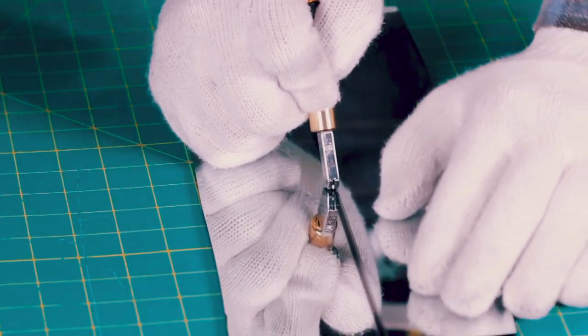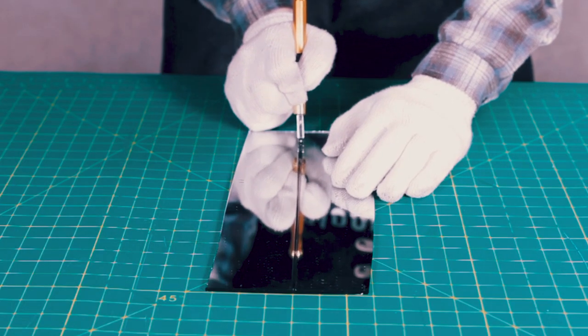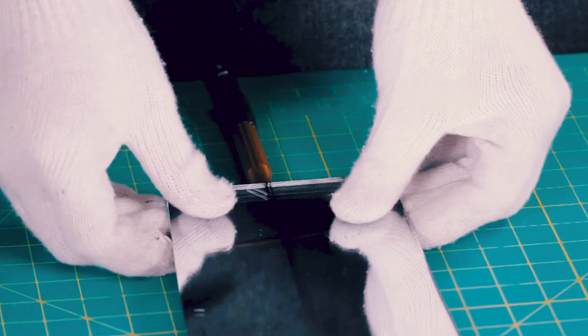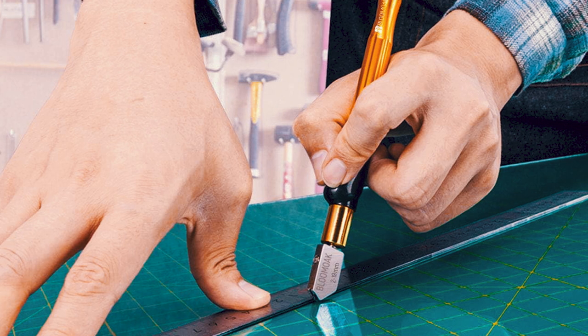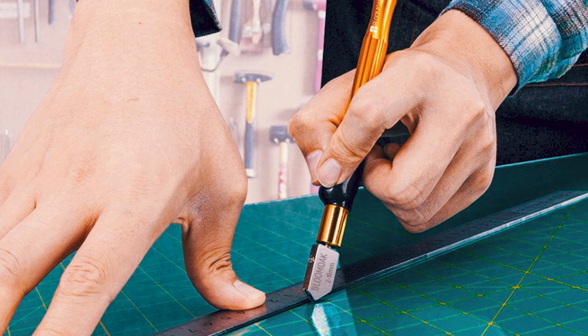The finger-stop design ensures each score is accurate and clear, making it ideal for cutting glass, tiles, and mirrors with ease. Ranging from 5-64 inches to 3-4 inches, this cutter is versatile enough for various tasks.